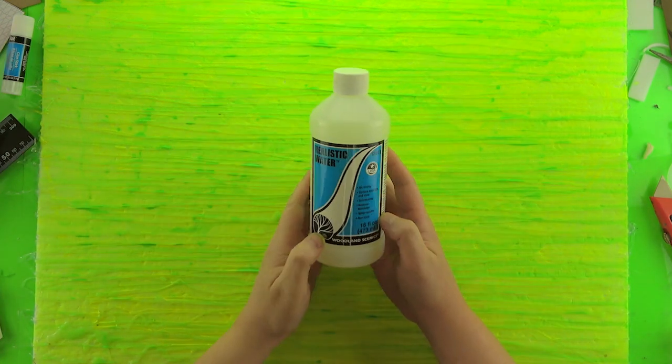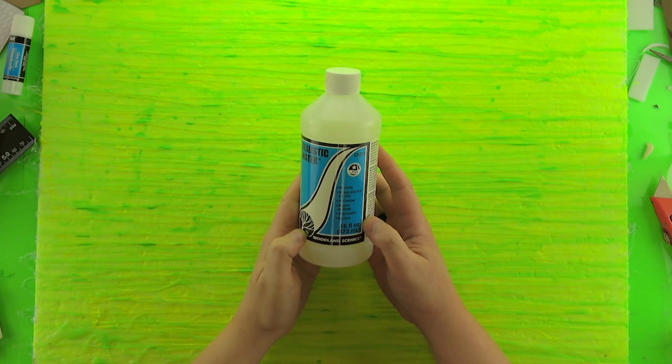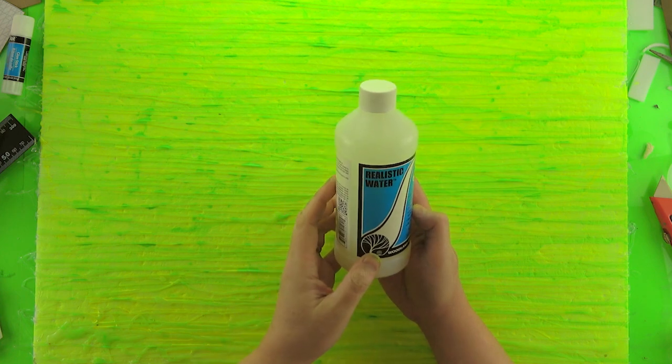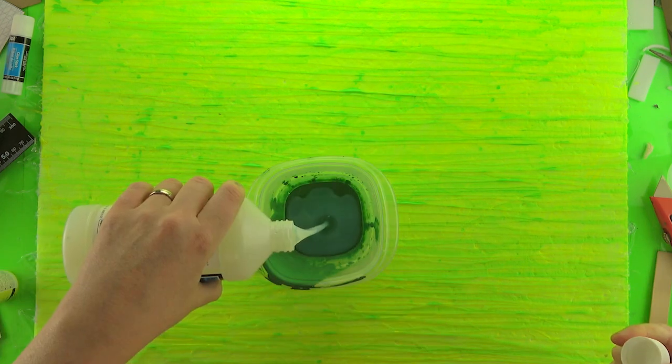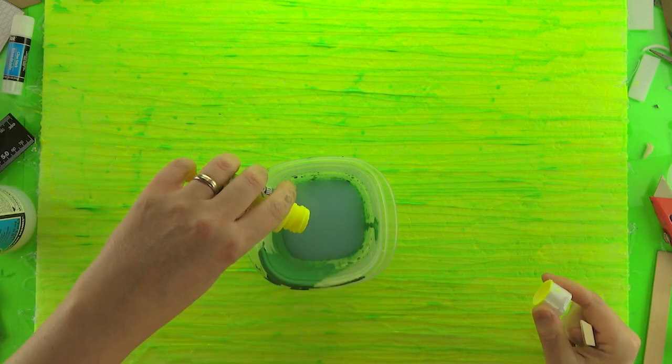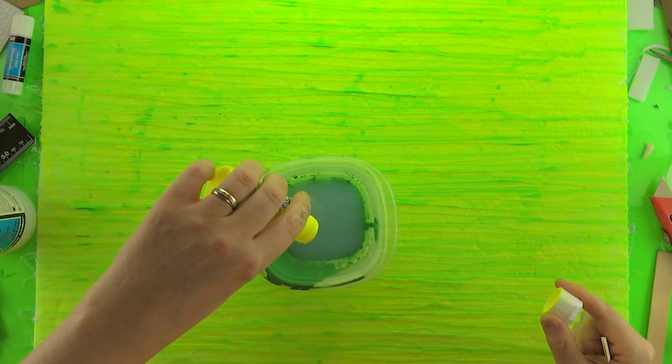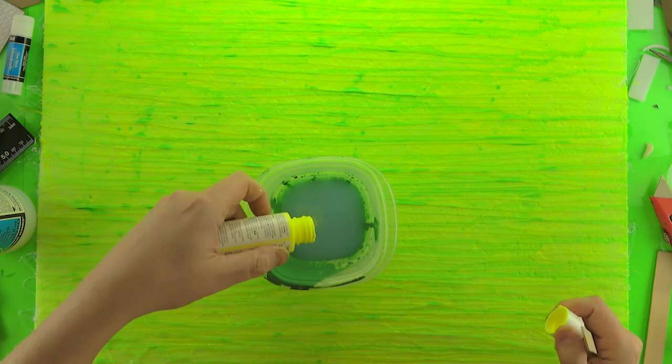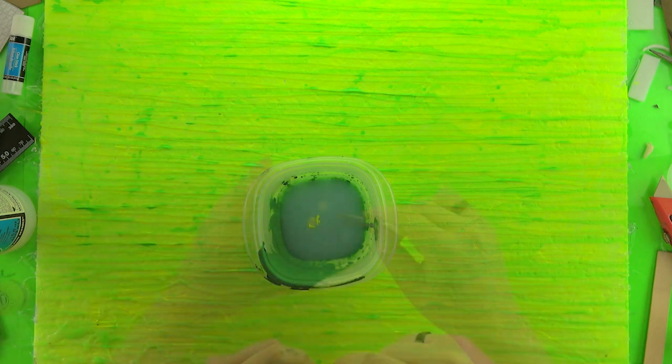As a final touch, I'm going to use realistic water. This is a great product—I'm not endorsed by them—but this is a really great product to add depth and glossiness to things. It's used on model railroad setups and dioramas to simulate water, and we're going to do the same thing here.